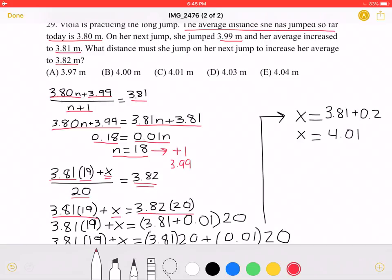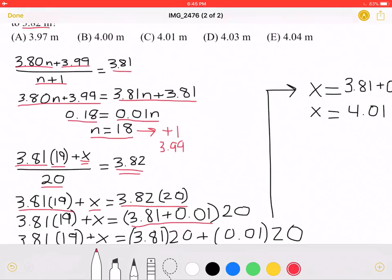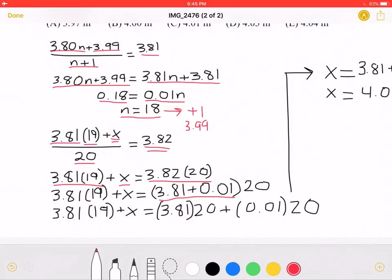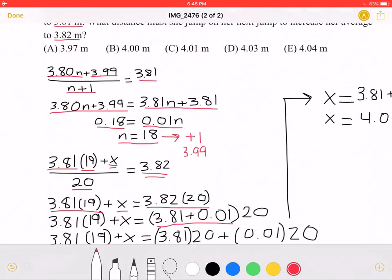Because we're not allowed to use calculators on the test, I'm going to write 3.82 as 3.81 plus 0.01, so it's easier to simplify. We can distribute the 20, as you can see below, as 3.81 times 20 plus 0.01 times 20.